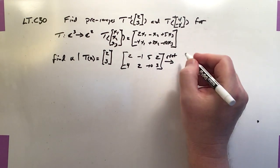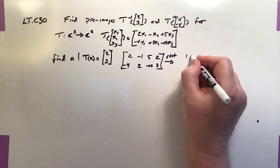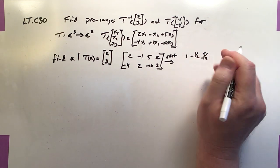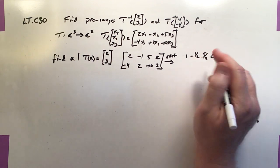And what we end up with is this: [1, -1/2, 5/2, 0]. So, so far, so good.